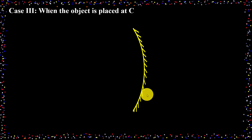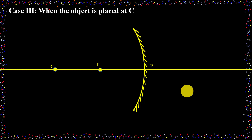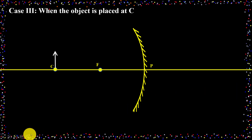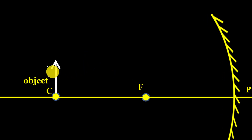First, we will take a concave mirror and we will mark the center of curvature C, focus F, and pole P. The line joining the center of curvature and the pole is called the principal axis. Now I need to place the object at C. Here is the object, placed exactly at the center of curvature.